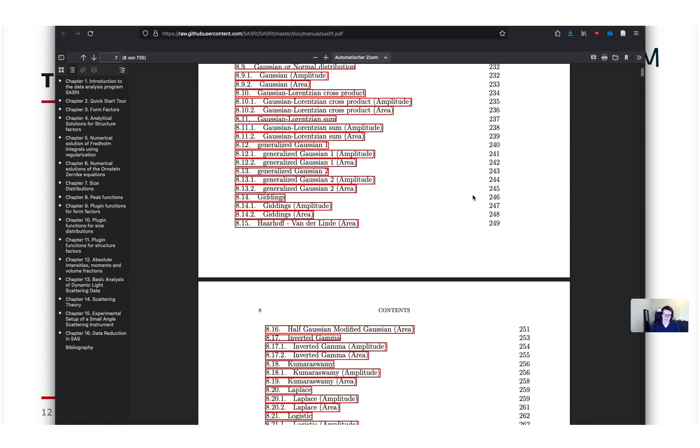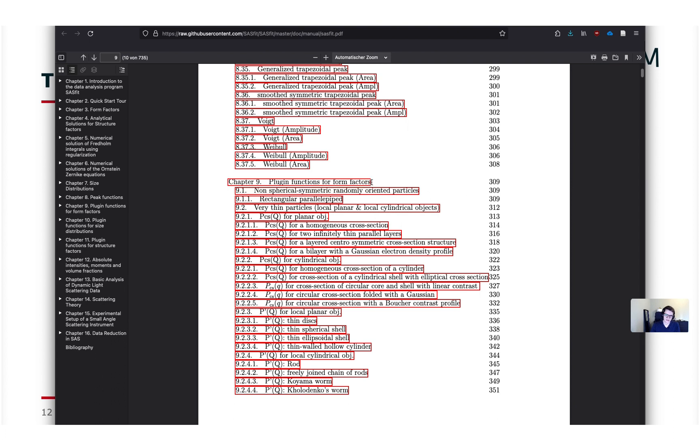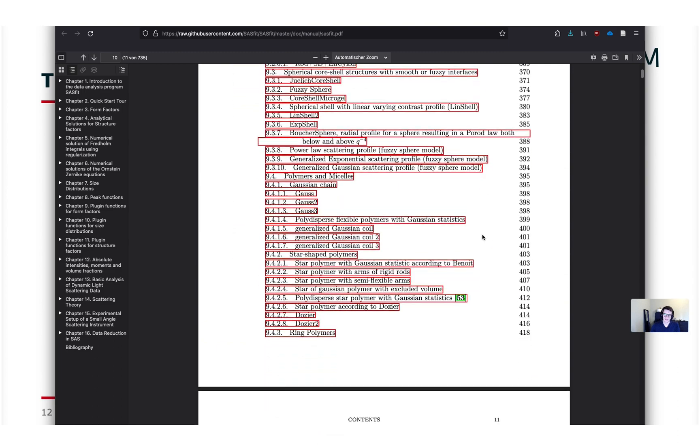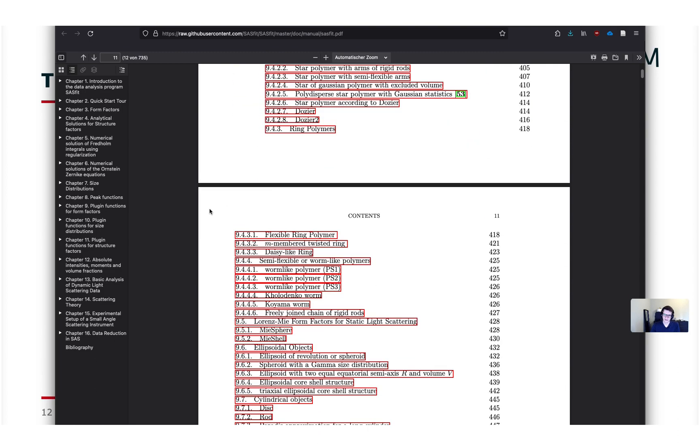Here we have size distributions and peak functions if you're looking for that. And also the definitions of form factors. Many of the functions were moved to plugin functions recently. So here's a separate section for that. In the form of plugin functions they can be reused easily in your own plugins for the program. If you want to implement your own models for example and reuse a specific already implemented model function. That would be possible.